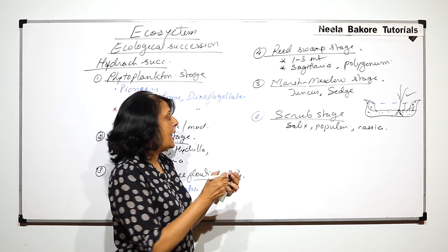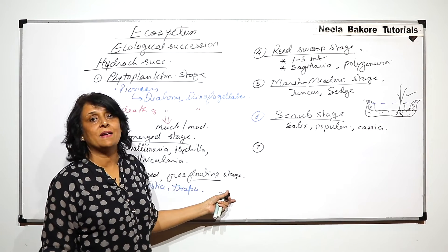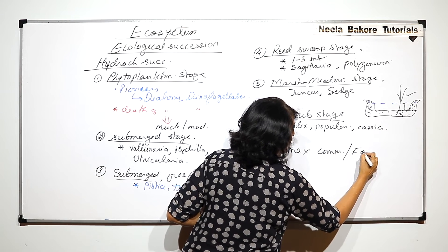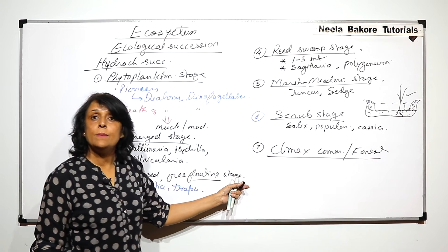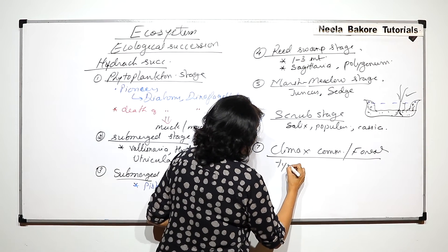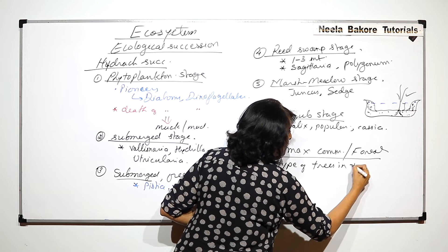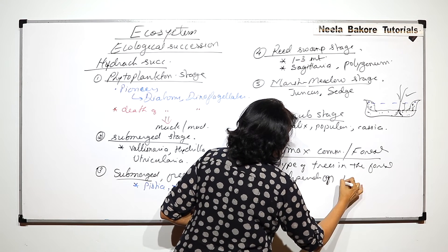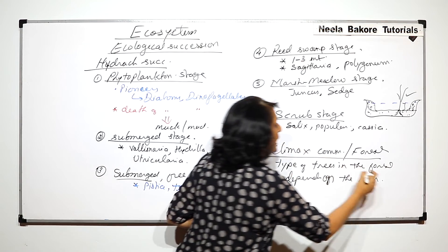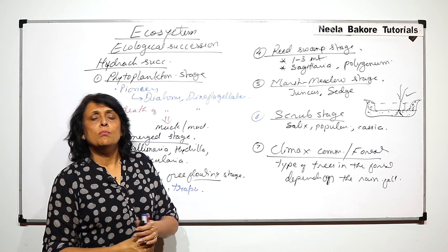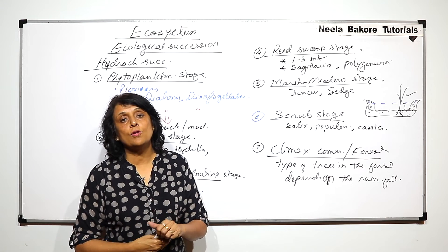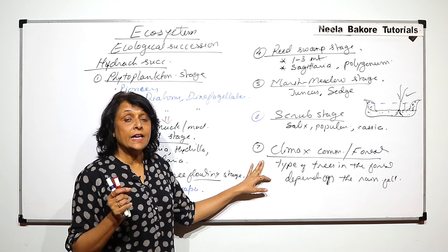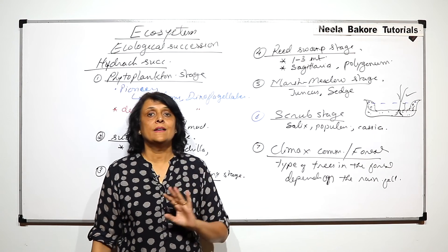And now comes the seventh stage which is the climax community. This is the climax community which is the forest and the forest type would depend upon the rainfall. Type of trees in the forest depends on the rainfall in that particular area. If it receives more rainfall then it is going to be a rain forest. So it is this factor, that is rainfall or precipitation, which would decide the type of trees in this particular community but this will be called the climax community.